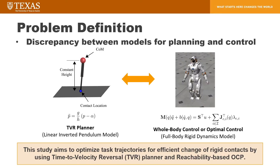We focus on the discrepancy between the planning and control models. For locomotion, we plan the center of mass trajectory and foot location with a TBR planner. However, we don't know if the planned result can be reproduced by the full-body robot due to these constraints. So, we propose a method to check whether the planned foot location is reachable, and to optimize the trajectory for the whole-body controller.